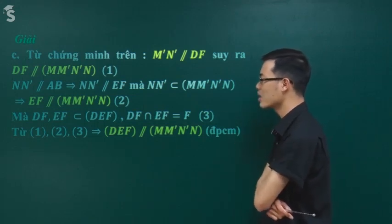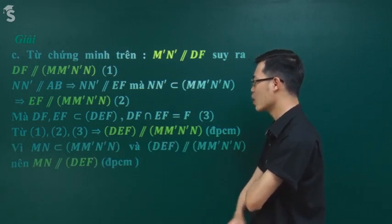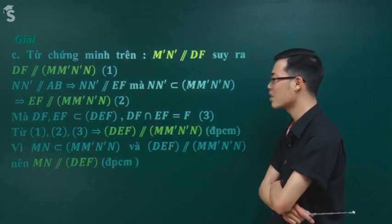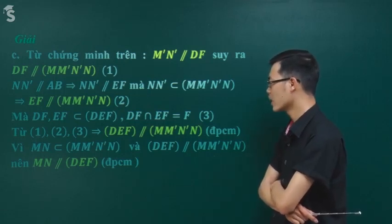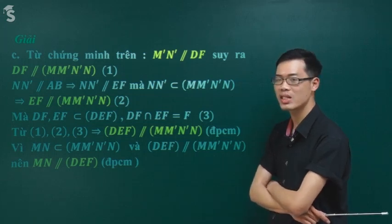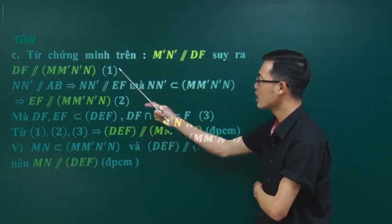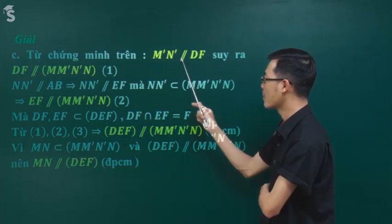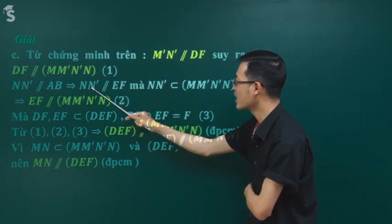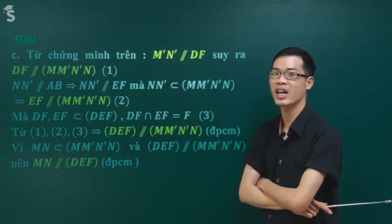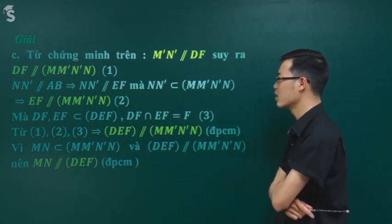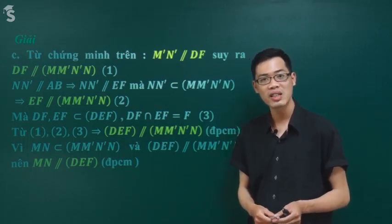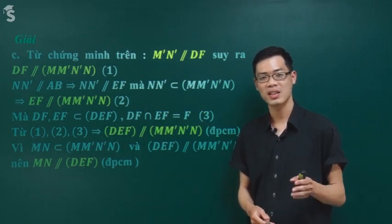Từ cái ý này thì kiểu gì các em cũng sẽ chứng minh được ý còn lại: MN song song DEF. MN nằm trong mặt phẳng MM'N'N nên tự nhiên phải song song mặt phẳng DEF. Đây là điều cần phải chứng minh. Bài tập này là bài mẫu đầu tiên thầy chỉ bày cẩn thận liên quan đến hình lăng trụ. Chúng ta hiểu bài rồi thì sẽ tiếp tục làm được bài tập tiếp theo.